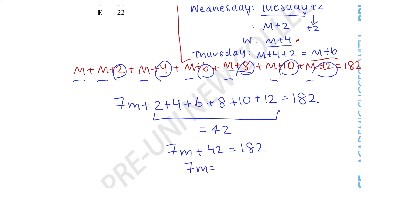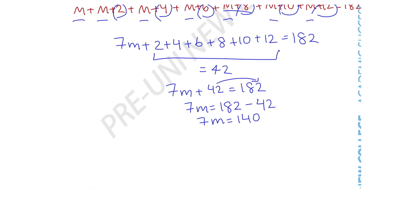7m equals 182 minus 42. Bringing the 42 over to the other side gives us 7m equals 140. Now dividing both sides by 7 to isolate m, we get m equals 140 divided by 7, which equals 20.